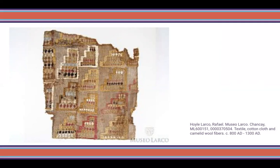While some burials display elegant new garments, others include worn ordinary clothes. Pictured here is a textile fragment made from cotton and camelid wool fibers by the Chanke people between 800 and 1300 CE. It features geometric motif patterns and hand embroidery using the camelid wool on a piece of cotton cloth.